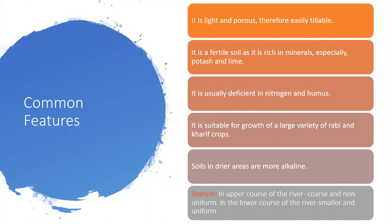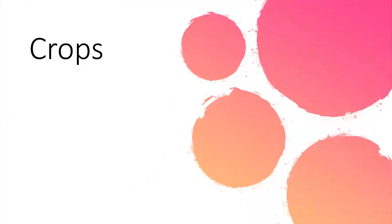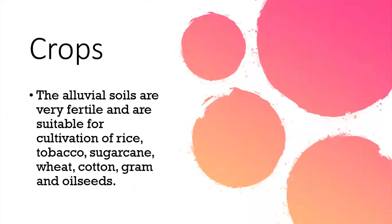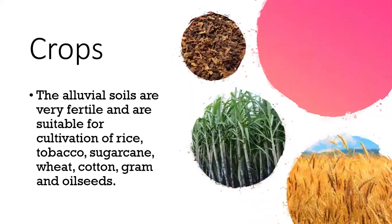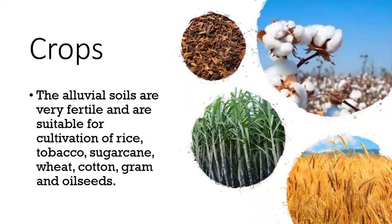They are found up to a depth of 500 meters. A large variety of crops can be grown in alluvial soils because it is very fertile. Alluvial soil is suitable for the cultivation of rice, tobacco, sugarcane, wheat, cotton, gram and oil seeds.